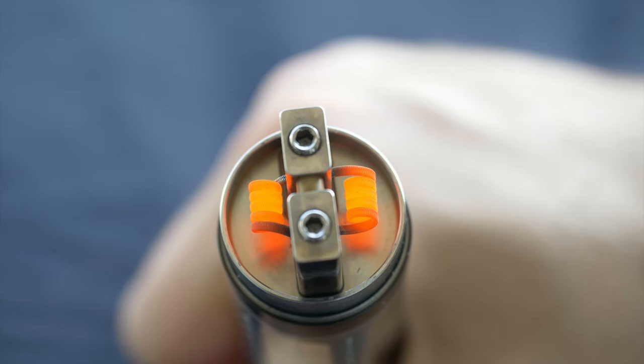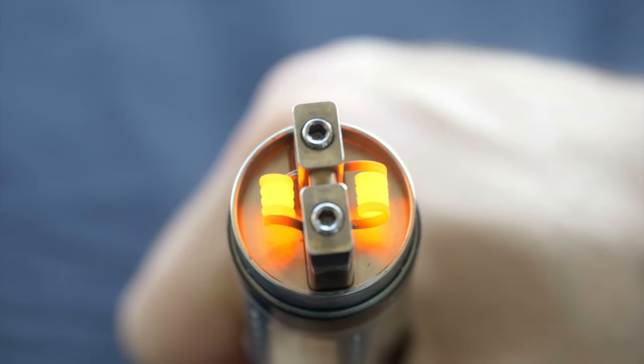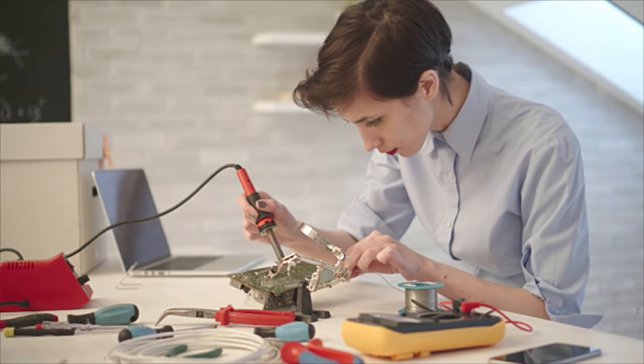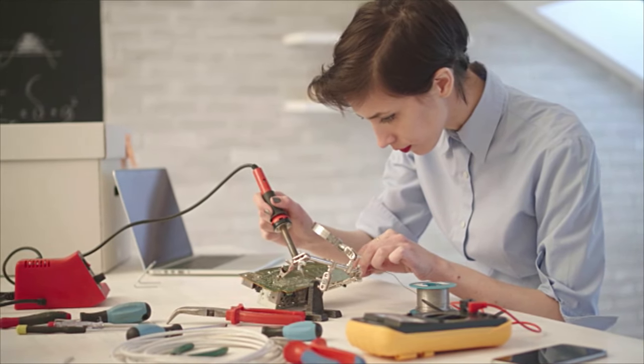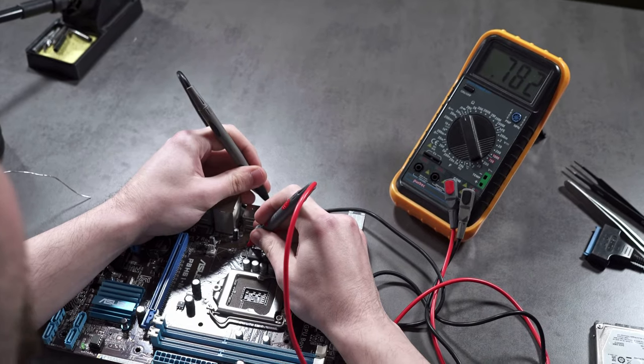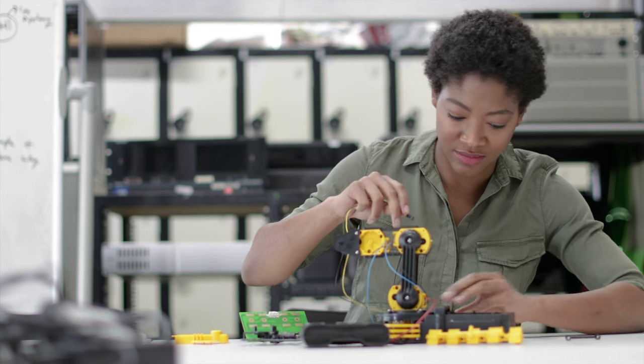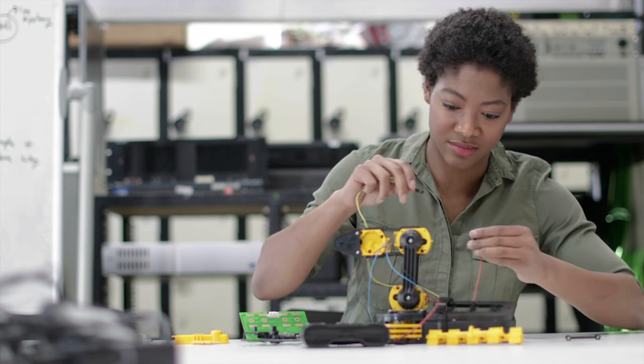Electronics engineering technicians use machine tools to make parts, such as coils and terminal boards. They resolve equipment malfunctions and maintain electronic systems, including testing components and replacing defective circuits. They also design basic circuitry and build prototypes from simple plans.